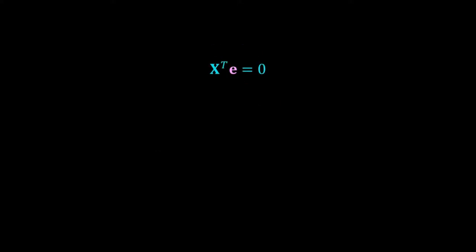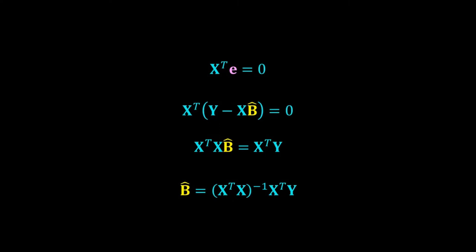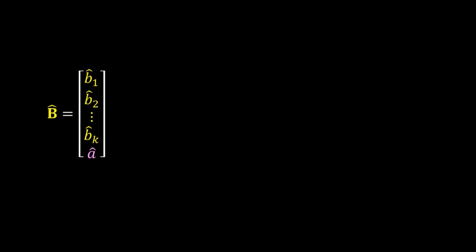Writing e as y − X*b_hat and rearranging the terms, we get b_hat = (X^T * X)^{-1} * X^T * y. This relation is used to estimate the coefficients in multiple linear regression. For a large number of variables, doing all these matrix operations may be difficult by hand, but there are good numerical recipes that can be easily executed on a computer, giving us the b_hat vector with all estimated coefficients so we can write the regressed equation.